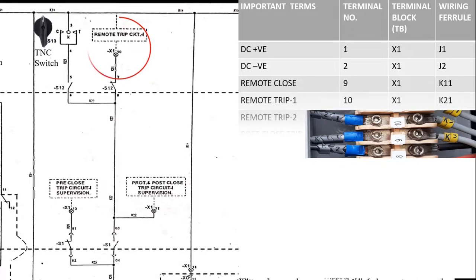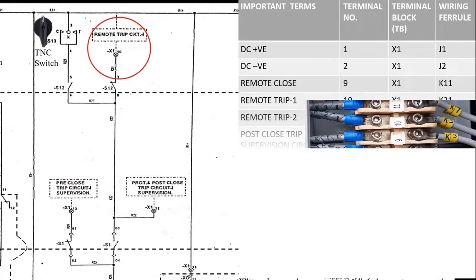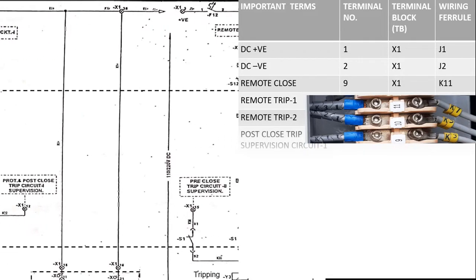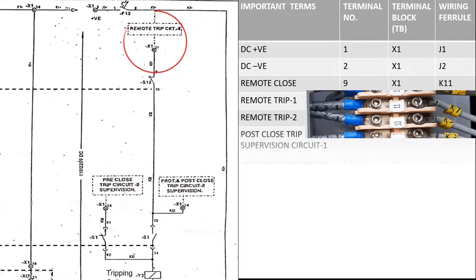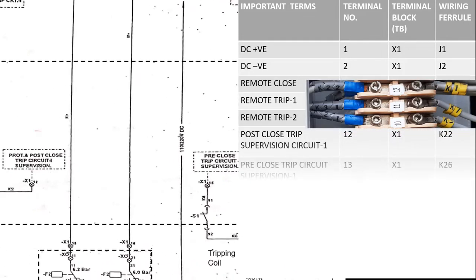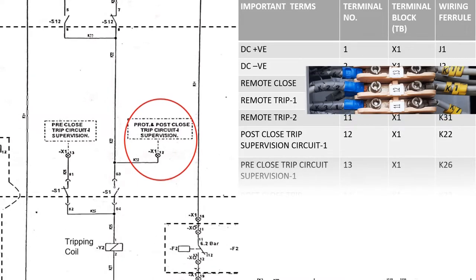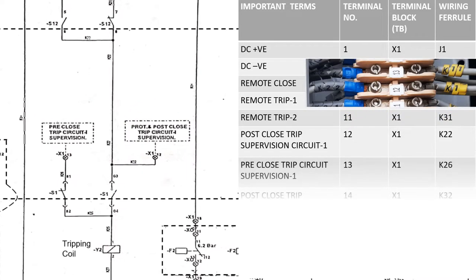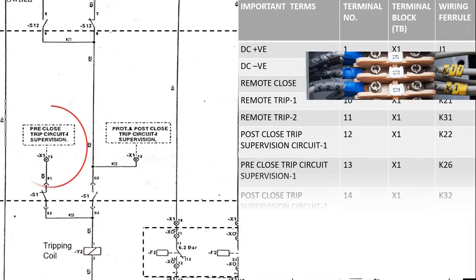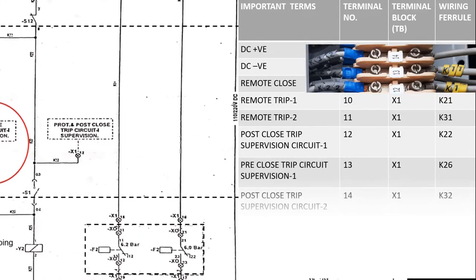Then post closed trip circuit supervision 1 on terminal 12 TBX1 ferrule K22, pre closed trip circuit supervision 1 on terminal 13 TBX1 ferrule K26. Similarly, post closed trip circuit 2 on terminal 14 TBX1 ferrule K32, and pre closed trip circuit supervision 2 on terminal 15 TBX1 ferrule K36.